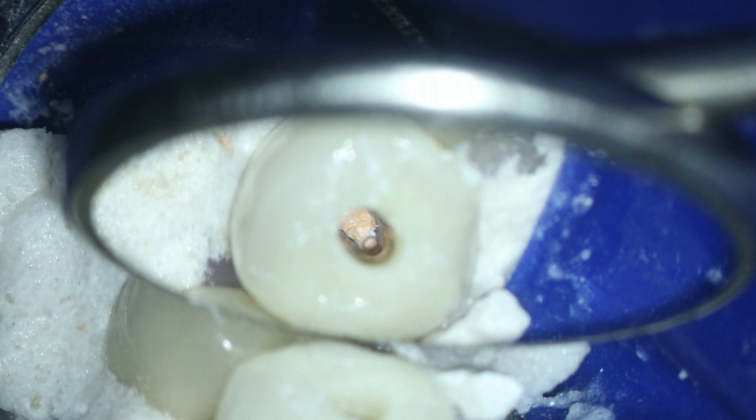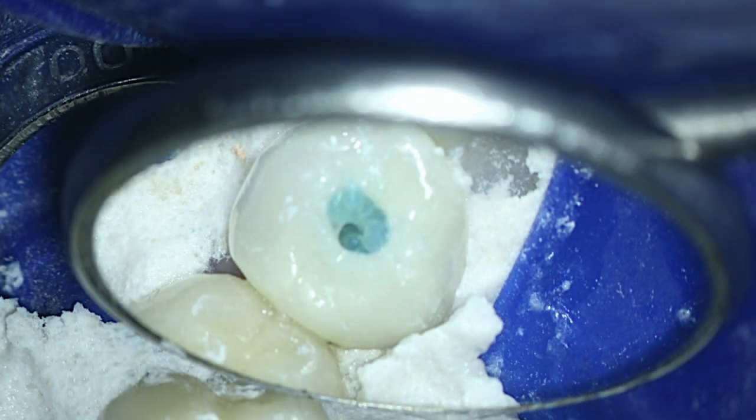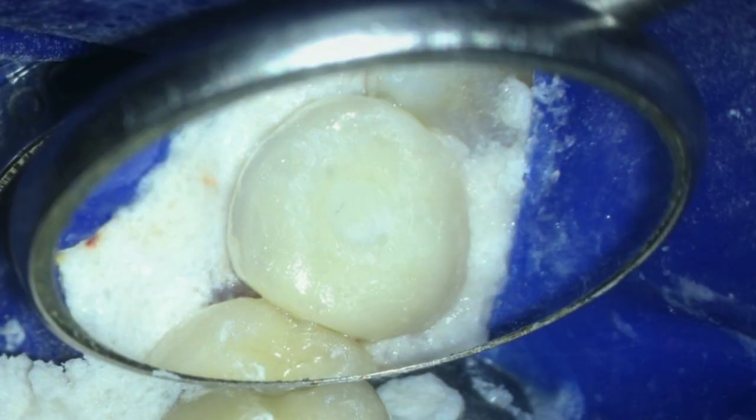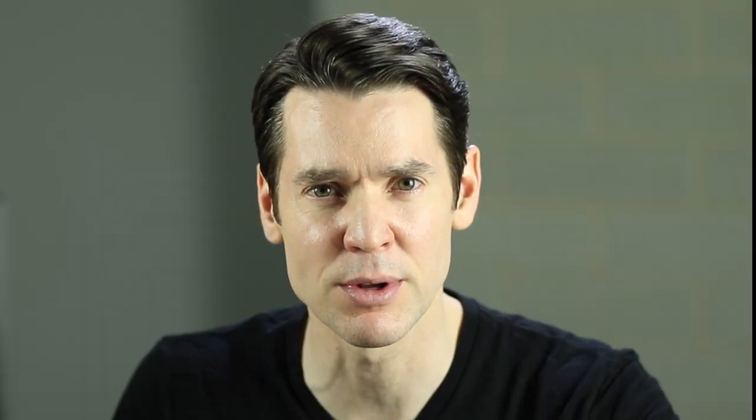I placed the final restoration in this case. I etched the dentin and, since we're dealing with a ceramic full coverage restoration, I also etched the porcelain. After the porcelain etched, I put a little silane on the area, air dried it, then did priming and bonding and placed the restoration. I try to place dual cure materials because it eliminates the variable of the light.